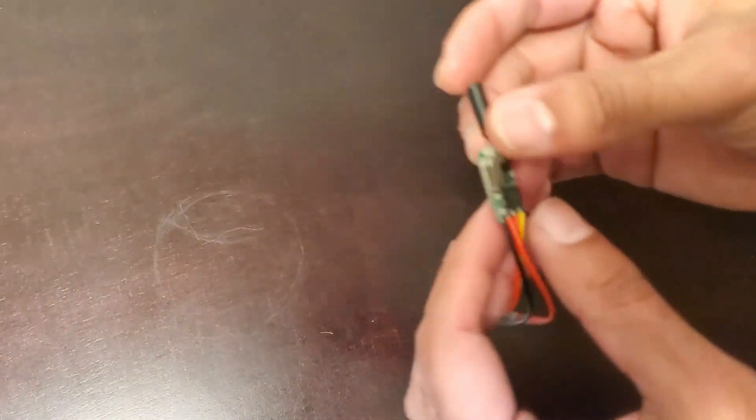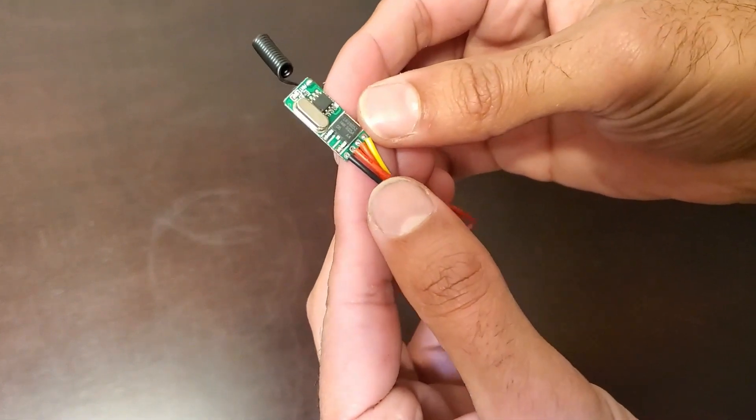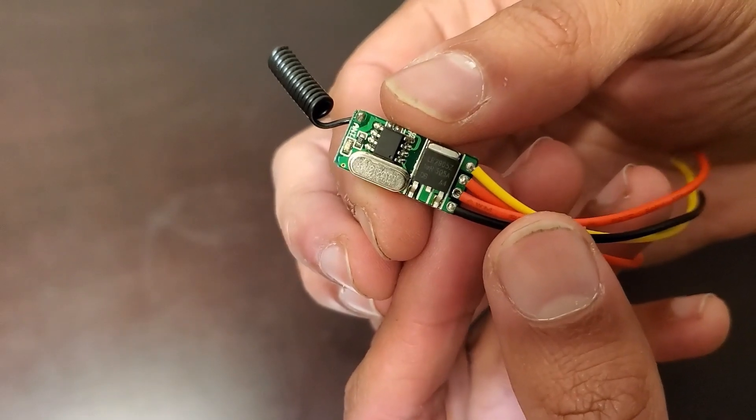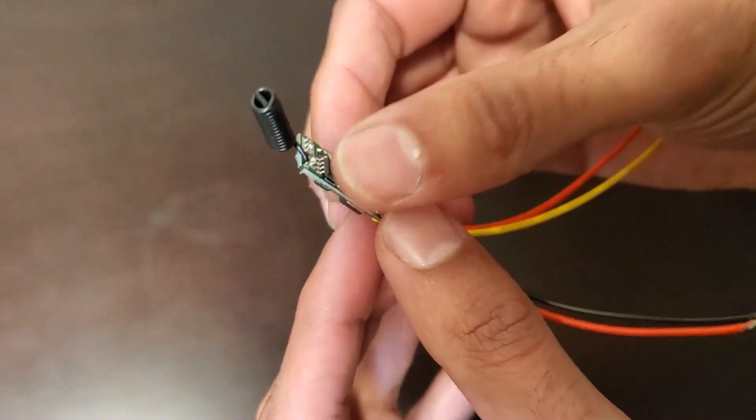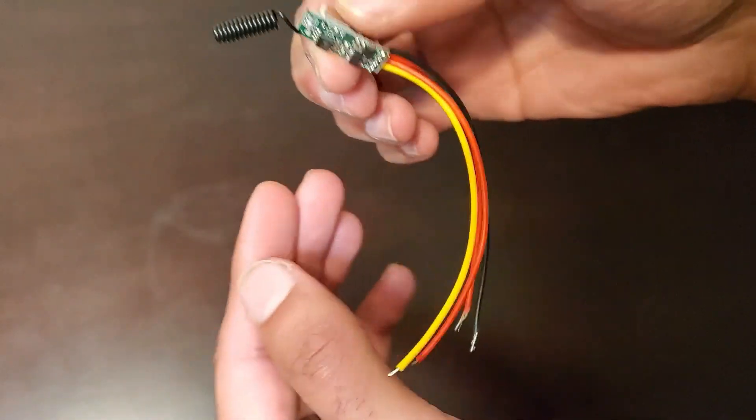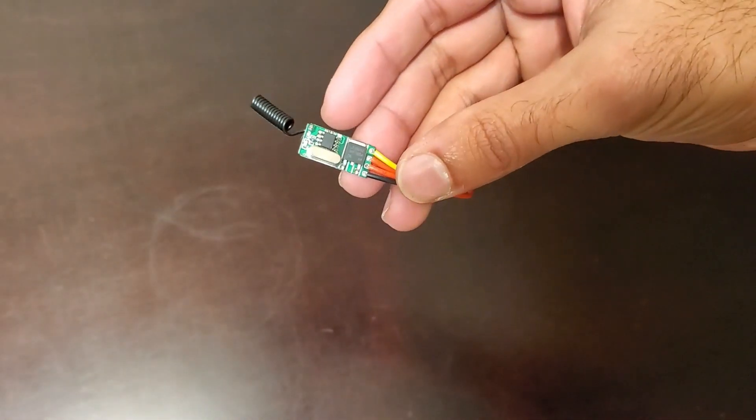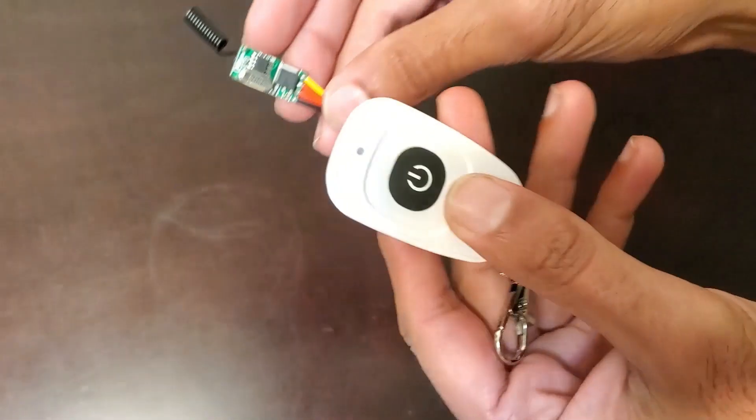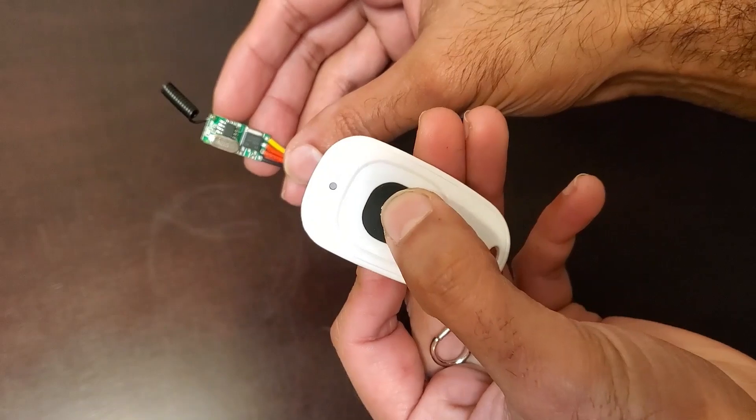This is a generic 433 megahertz RF transmitter and receiver I picked up for a couple bucks on Amazon. I'll drop the link below if anybody is interested. It has a wide operating voltage of 3.5 to 12 volts. It doesn't come with any sort of written instructions, but it's fairly easy to figure out how it works from the writing on the terminals.